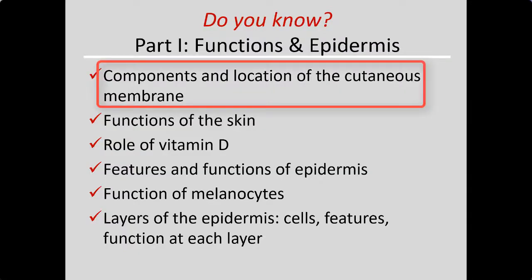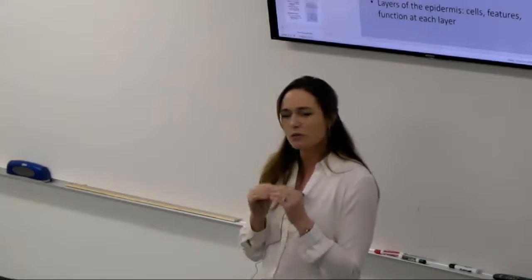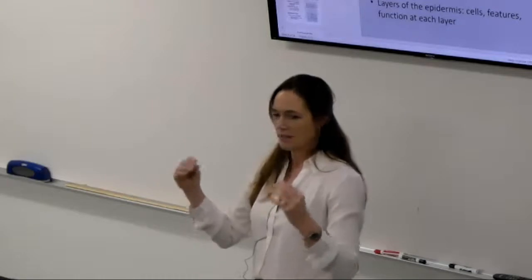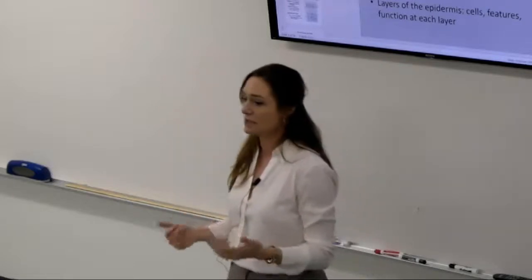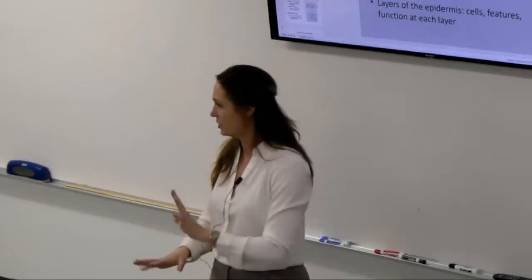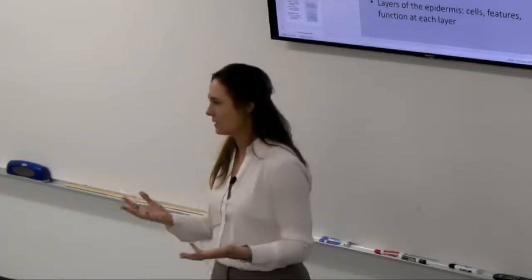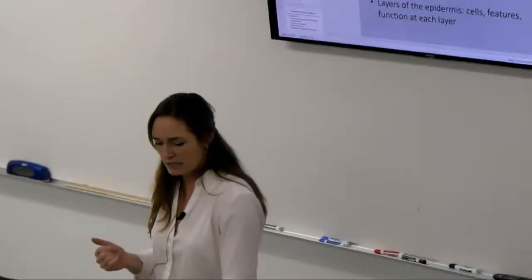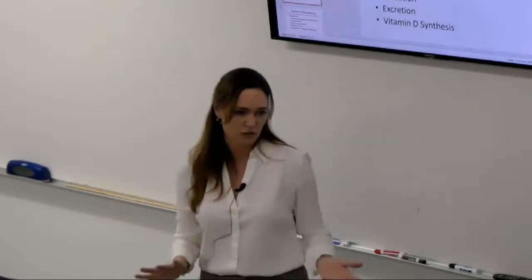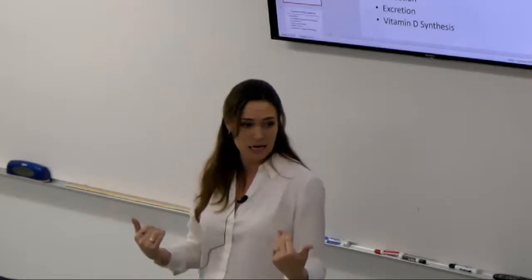The cutaneous membrane components: the dermis is the true skin — dense irregular connective tissue. On top is the epidermis, which is epithelial tissue. Below the dermis is the loose adipose connective tissue of the hypodermis. Functions of skin include protection from abrasion and immune defense. Dead skin cells help protect against viruses and bacteria — burn victims face increased infection risk due to loss of this protection.